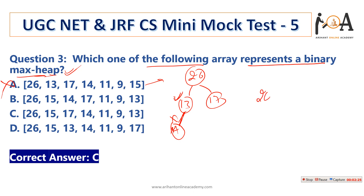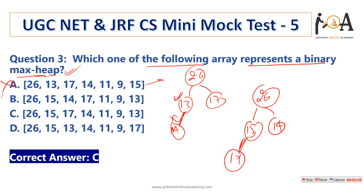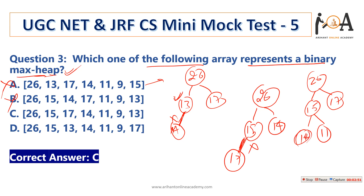For option B — 16, 15, 17, 17 — the value 17 is a child of 15, which has lesser weight, so the max-heap property fails again. Option B is also not the answer. Option C is correct: 26 at root, with children 15 and 17 both less than 26. Then 14 and 11 are less than 15, and 9 and 13 are less than 17. At every node, the max-heap property is satisfied. So option C is the correct answer.